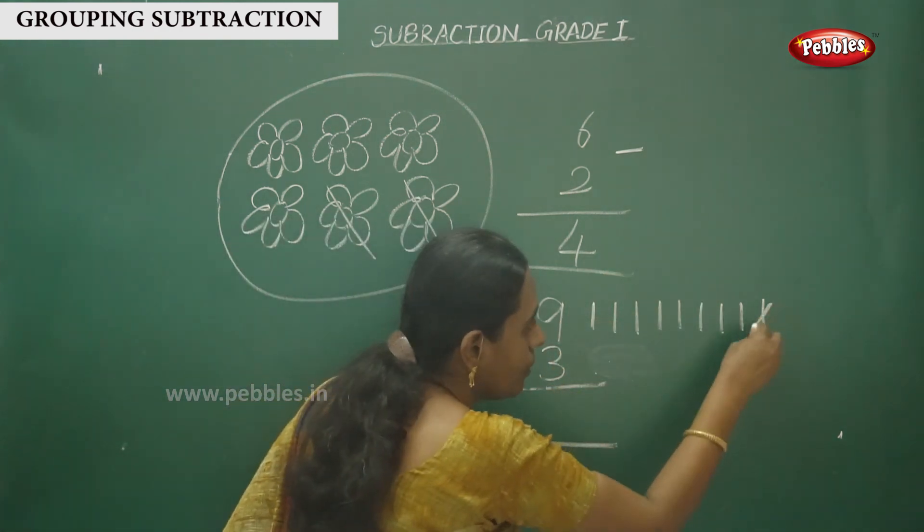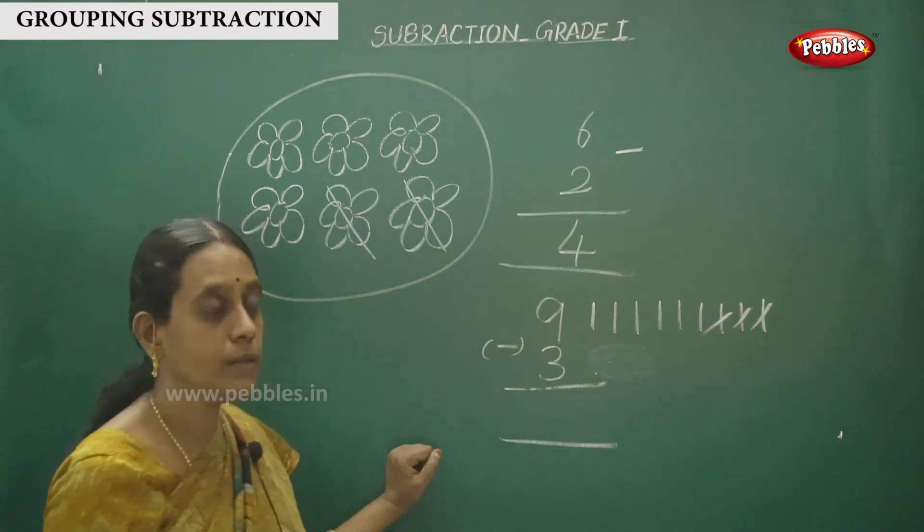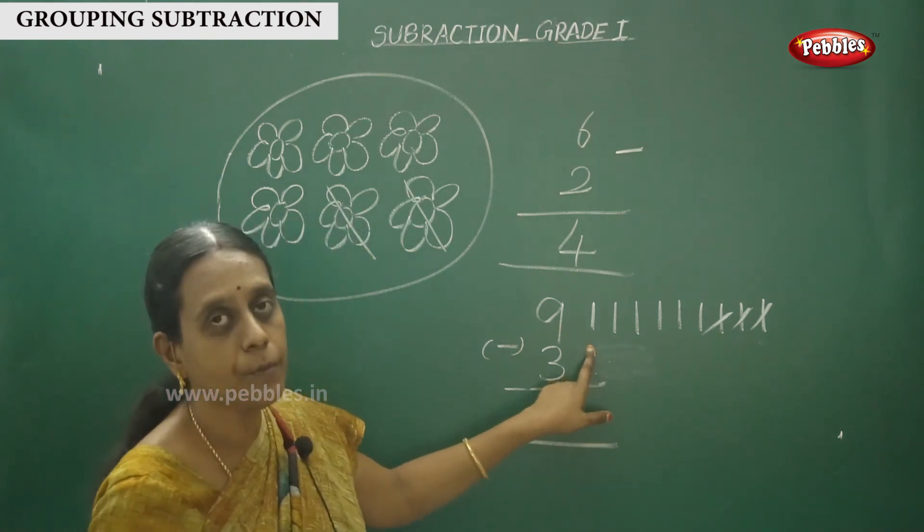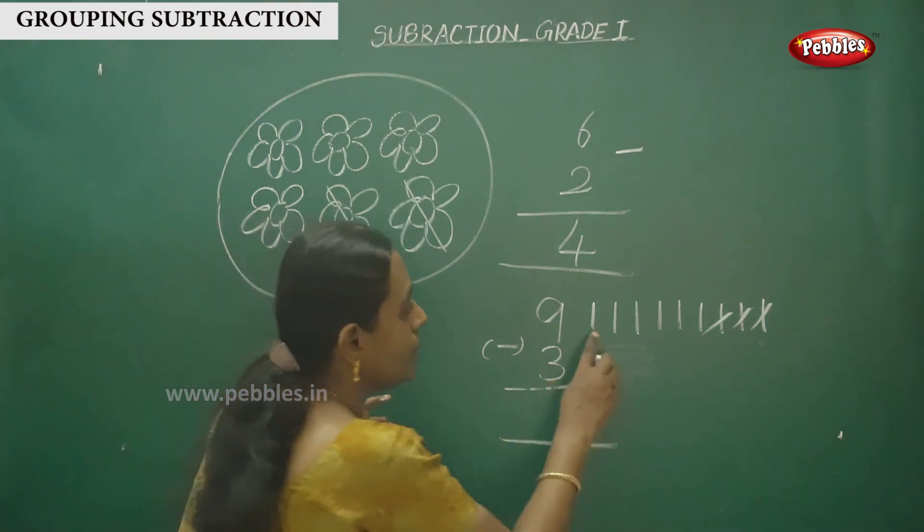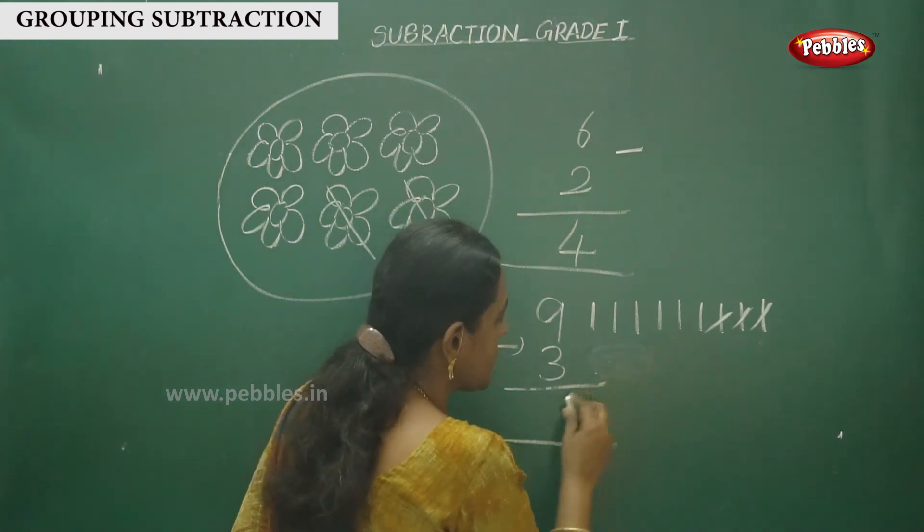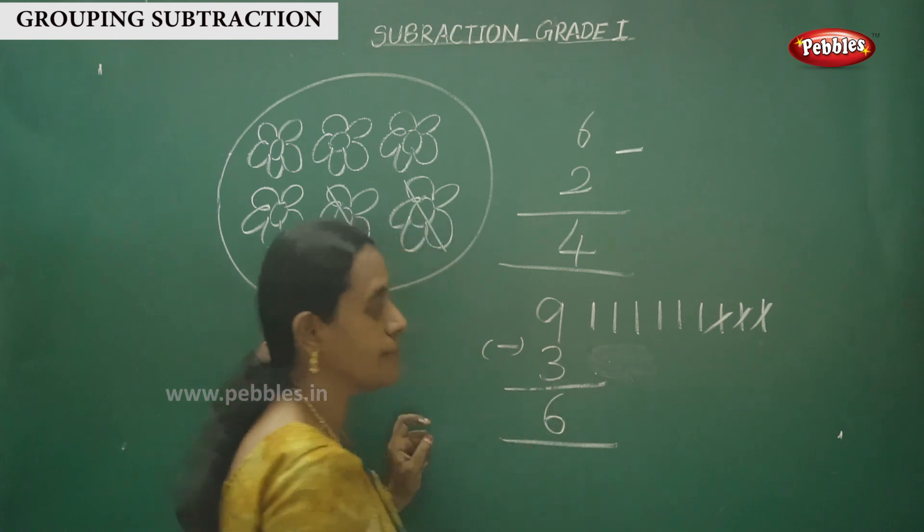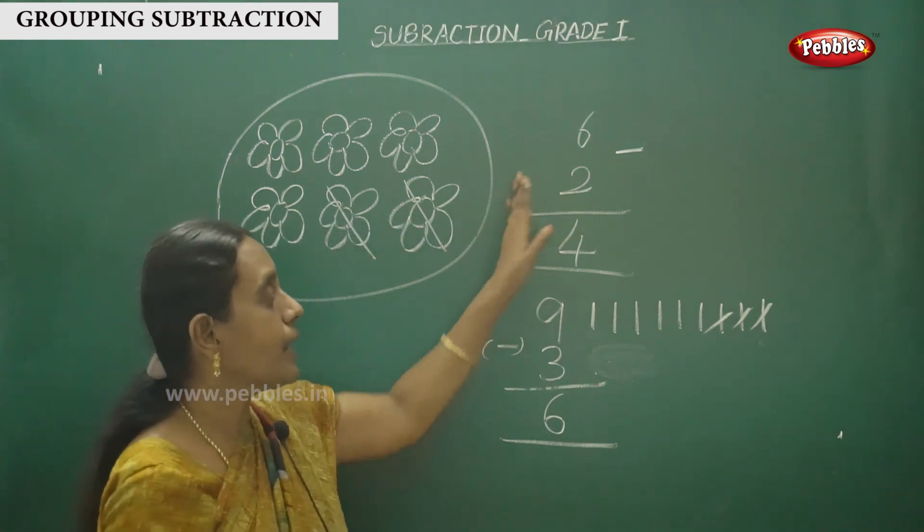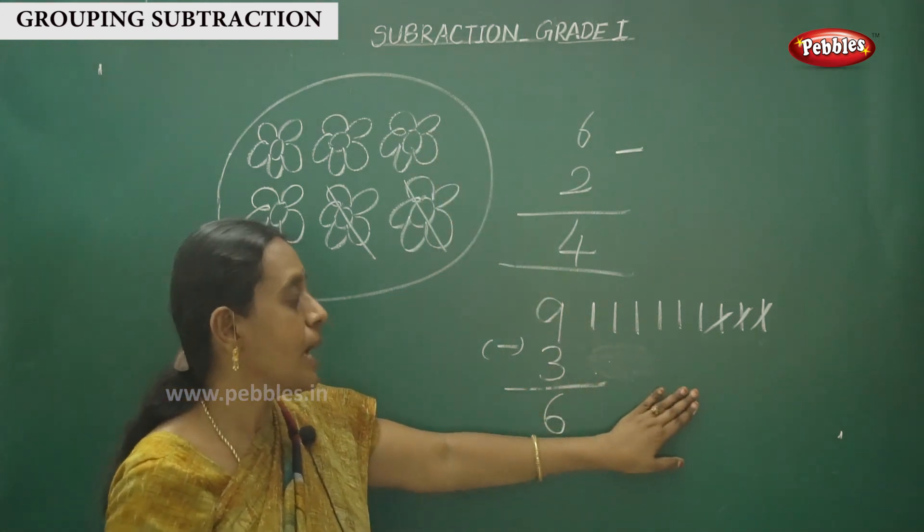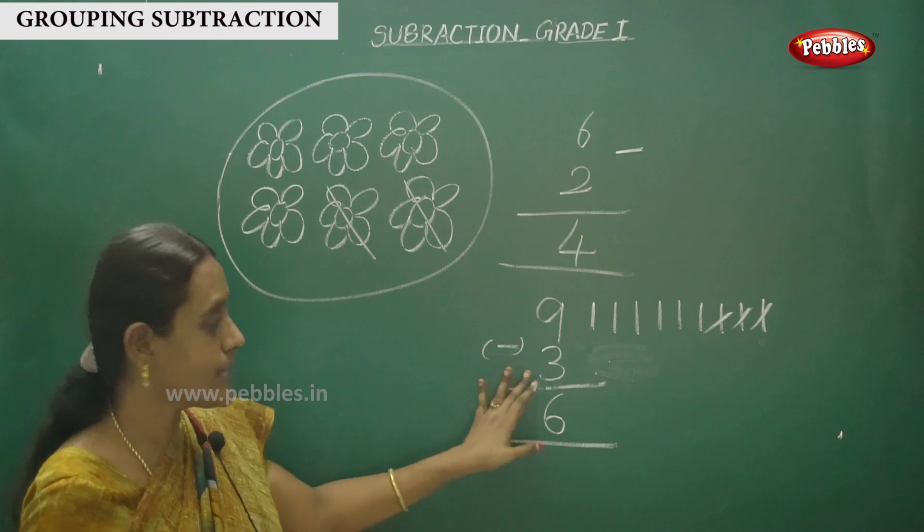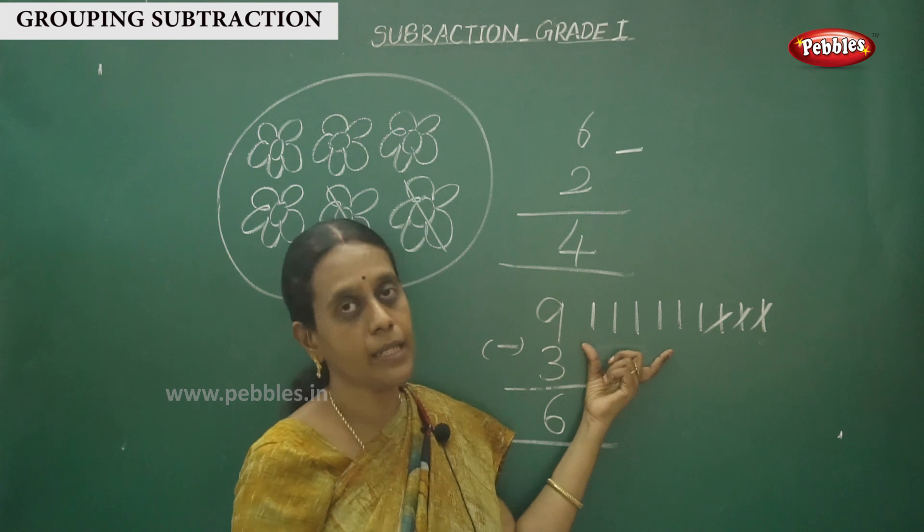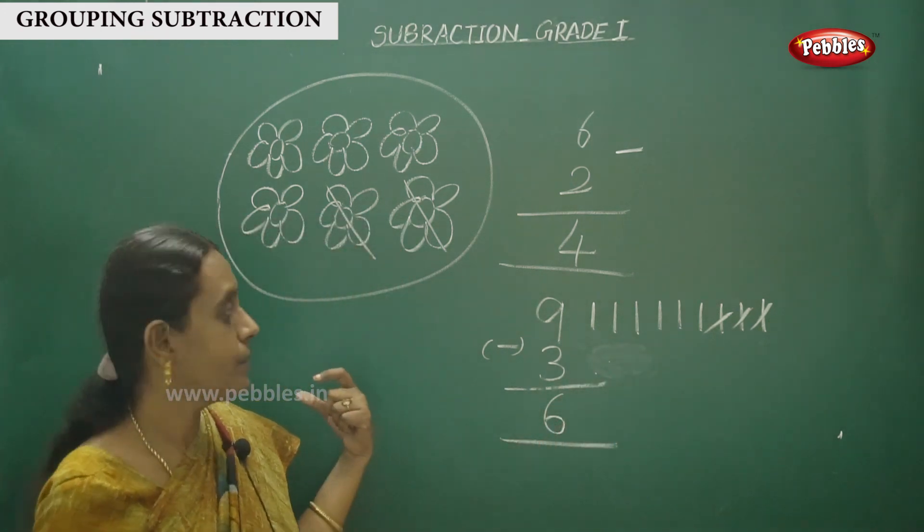So here are 3. 1, 2, 3 you can see. Strike out. How many numbers are remaining? 1, 2, 3, 4, 5, 6. So the answer is 6. Understand children, this is the way by drawing representation. You have to draw lines, subtract the lesser number, strike out the number, and finally count the remaining number and write the answer.